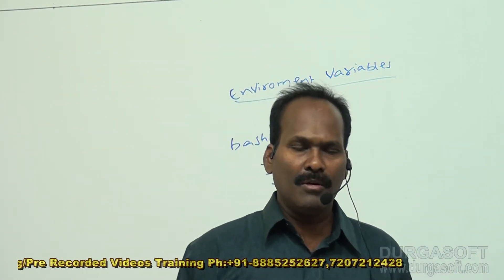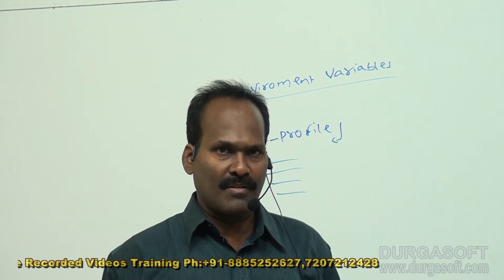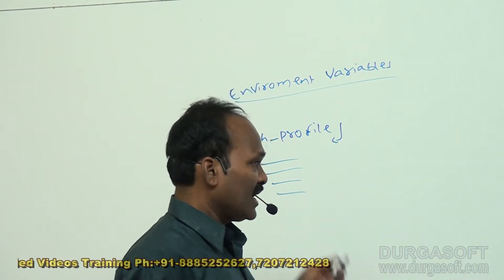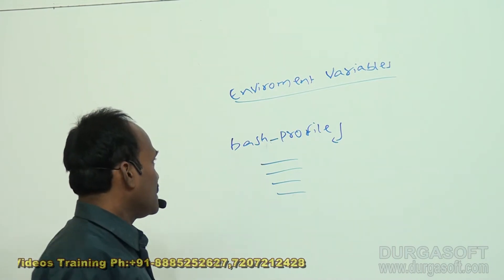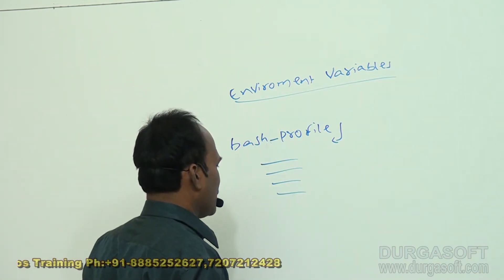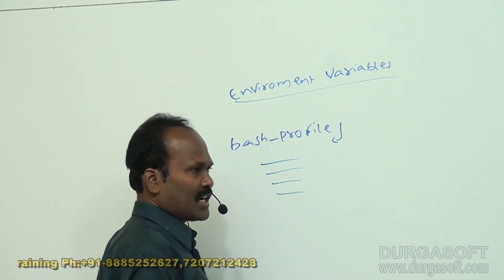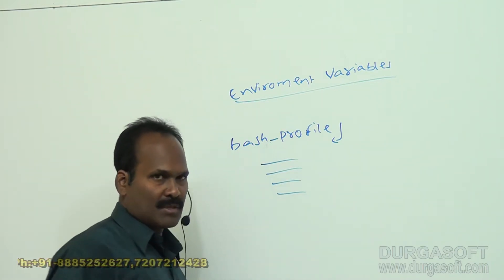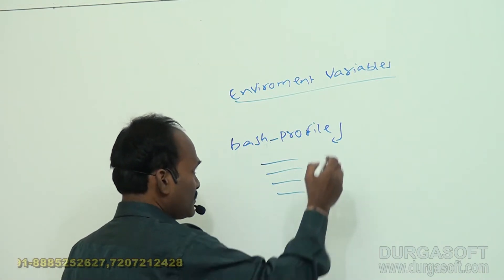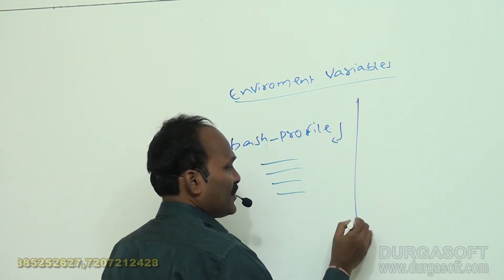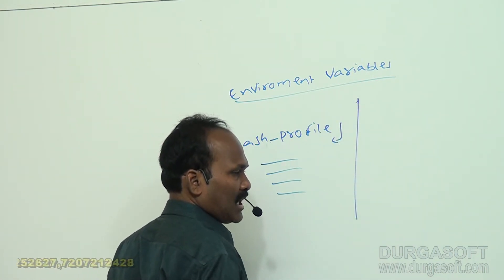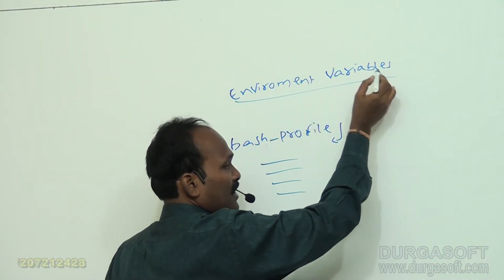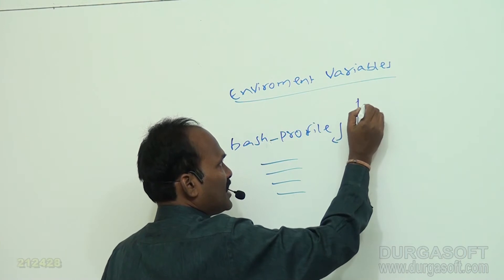The bash_profile file is going to be executed automatically whenever you log into the system. This file is going to contain all customization information like path settings, home directory, and PS1. All these environment variables can be set using the dot bash_profile file. Some variables are defined by the Linux operating system shell, and some variables we can define on our own.